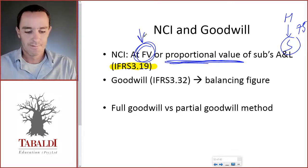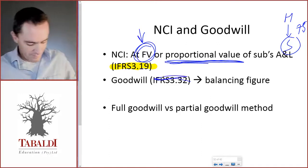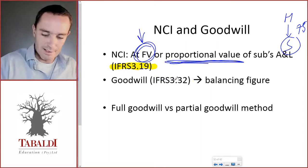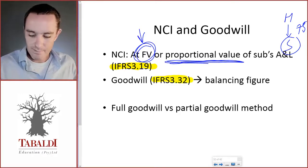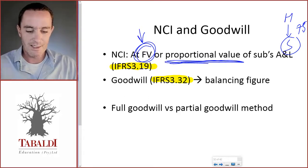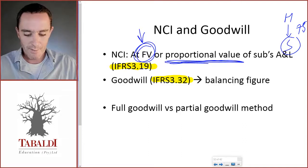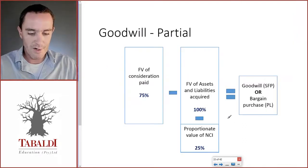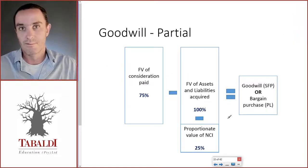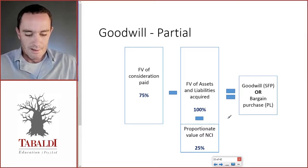Goodwill, per paragraph 32, is the balancing figure. Let's look at the effects of valuing NCI at fair value versus the proportional value. If it's at the proportional value, we call this the partial goodwill method — and you'll see why.